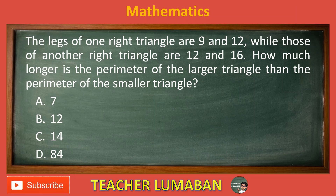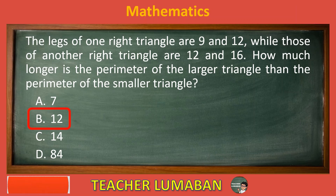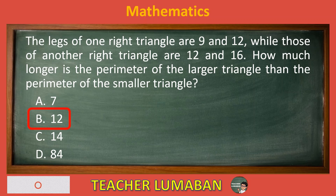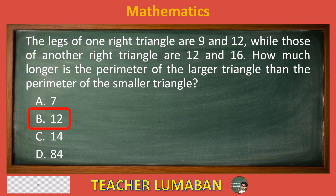The correct answer is Letter B: 12. The legs of one right triangle are 9 and 12, while those of another right triangle are 12 and 16. The perimeter of the larger triangle is 12 longer than the perimeter of the smaller triangle.